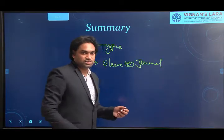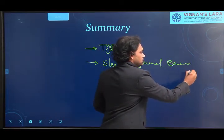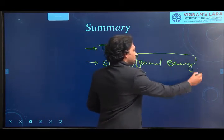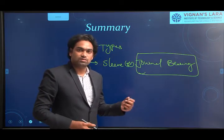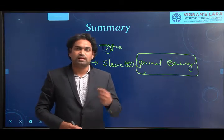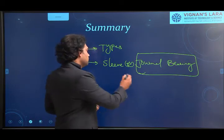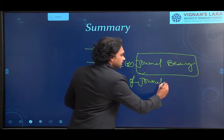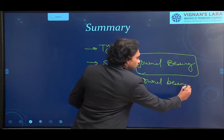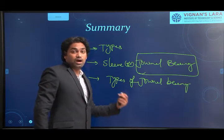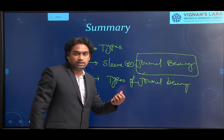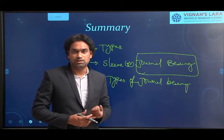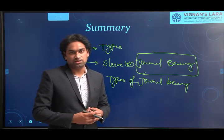The journal bearing is a plain type of bearing subjected to radial loads. As per our subject, we mainly focus on this journal type. The journal represents the portion of the shaft that lies on the sleeve. We also reviewed the types of journal bearings based on angle of contact: full journal bearing (360 degrees — completely enclosed) and partial journal bearing (120 degrees — partly enclosed).